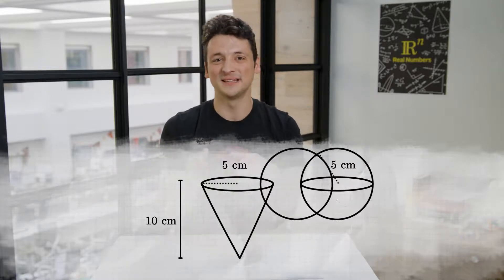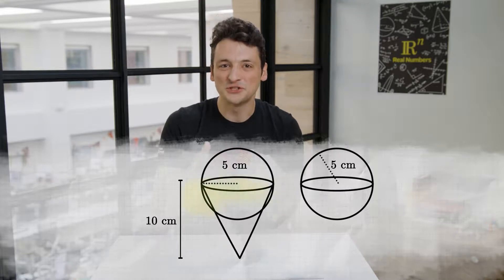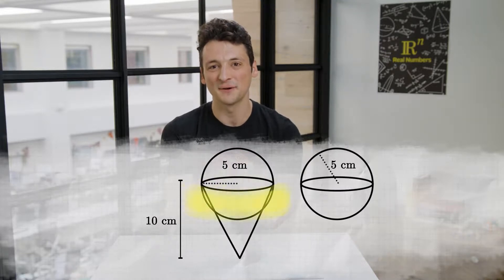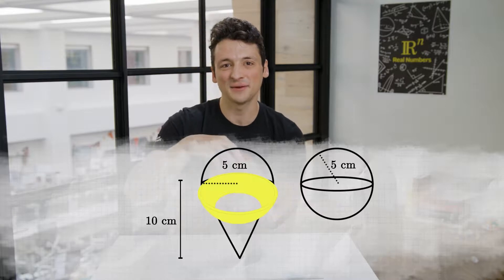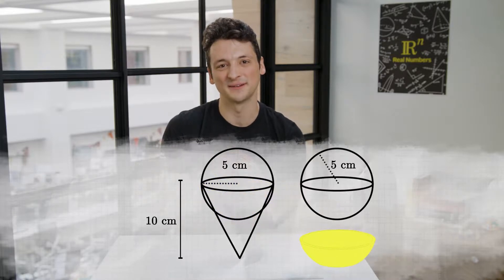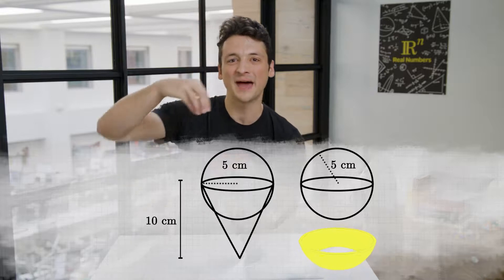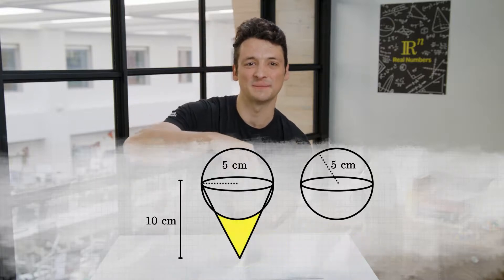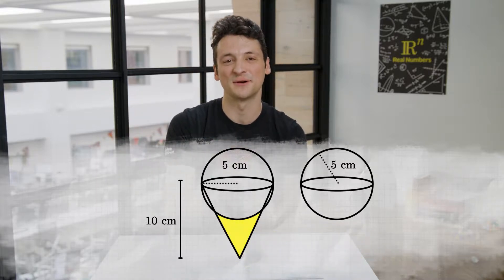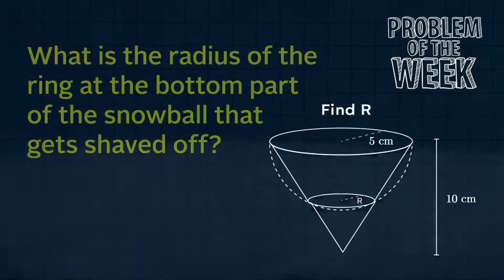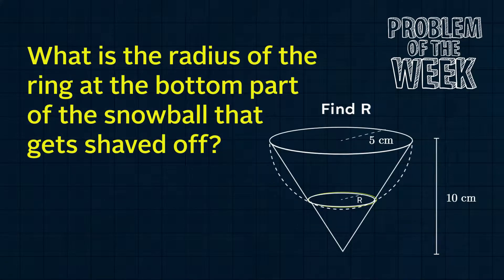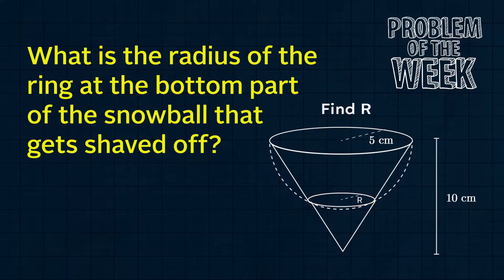If we want to move the least amount of slush in this reshaping, we should shave off some amount of snow from just beneath the equator — the part of the sphere that is wider than the cone. That shaved ice will be packed into the point of the cone that dips below the sphere of the snowball. The problem of the week is: what is the radius of the ring at the bottom of the part of the snowball that gets shaved off? Another way to ask this: if we were to superimpose our spherical snowball with the cone we are fitting it into, what is the radius of their circle of intersection?